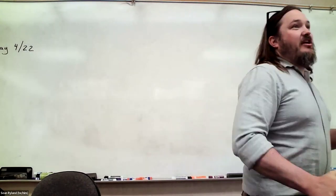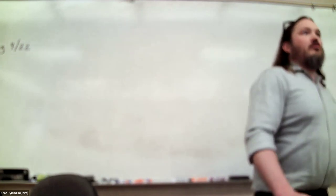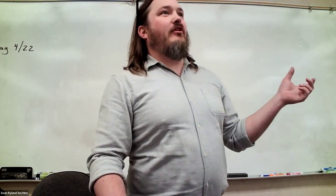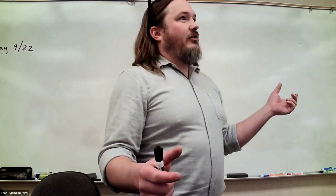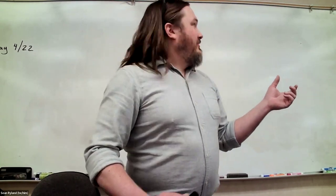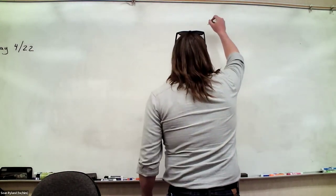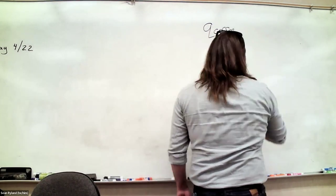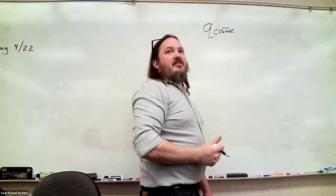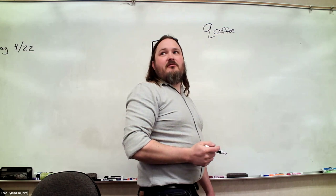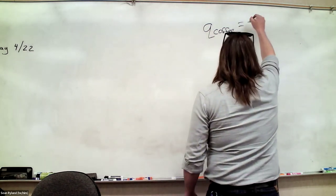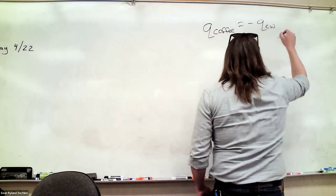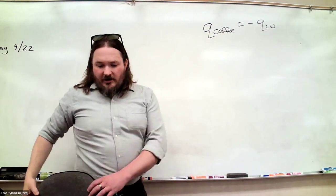We have two things changing temperature here: we have hot coffee cooling down and cool water warming up. What do we know about the two Q values? If they're both ending at the same final temperature, they must be equal but opposite. So Q for the coffee equals Q for the cold water.